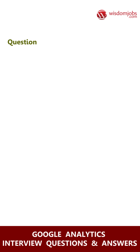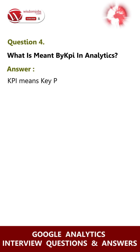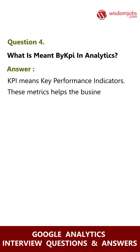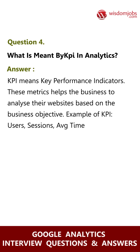Question 4: What is meant by KPI in analytics? Answer: KPI means Key Performance Indicators. These metrics help the business to analyze their websites based on the business objective. Examples of KPIs include users, sessions, average time, bounce rate, conversion rate, etc.